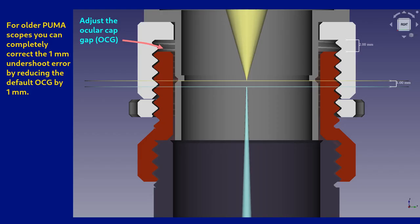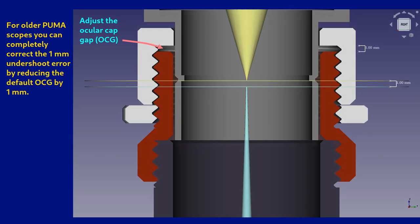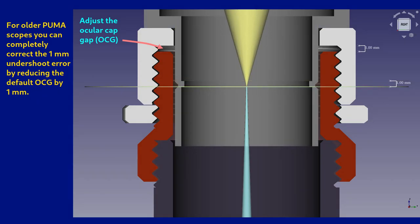For anyone with an older Puma scope, it is very easy to compensate for this 1mm undershoot error without doing any extra printing. For any config that uses an eyepiece, simply use a default ocular cap gap, or OCG, of 1mm instead of the usual 2mm. That's it. All done.